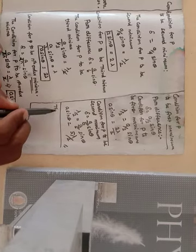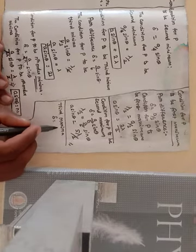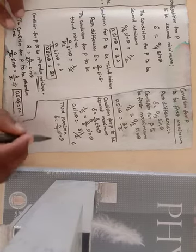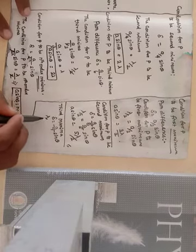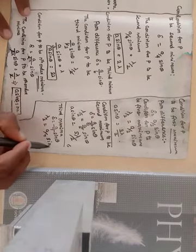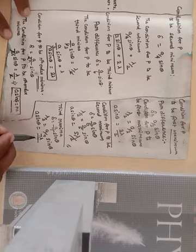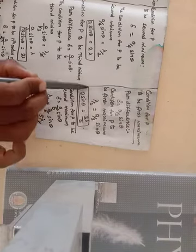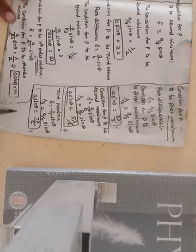For the third maxima, the condition is delta = (A/7) sinθ. Using the general condition for destructive/constructive interference, lambda/2 = (A/7) sinθ, giving A sinθ = 7λ/2. To summarize: first maxima: A sinθ = 3λ/2; second maxima: A sinθ = 5λ/2; third maxima: A sinθ = 7λ/2.